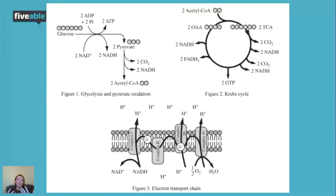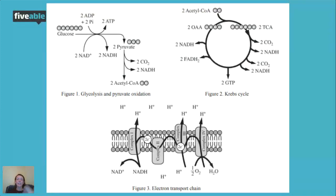We get a net gain of two ATP from glycolysis — we invest two ATP and make four, for a net of two. We also form two electron carriers: NAD+ is the empty electron carrier, NADH is the full one. When we break bonds — bonds are just shared electrons — we release electrons and fill up electron carriers, which will be used later in the electron transport chain.